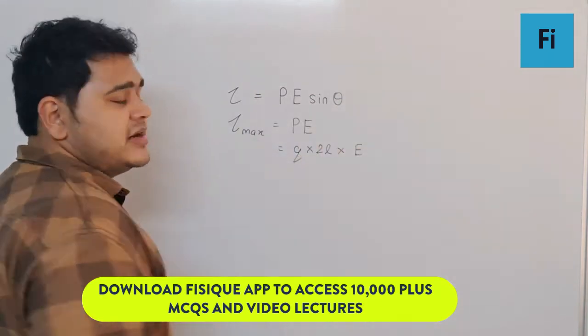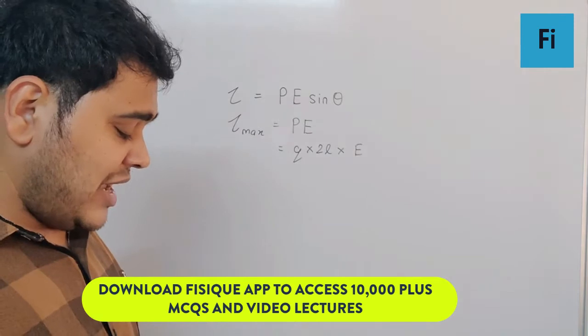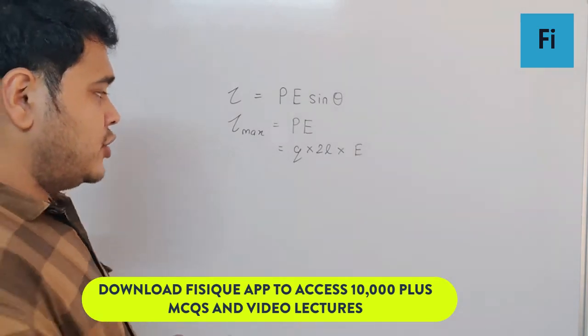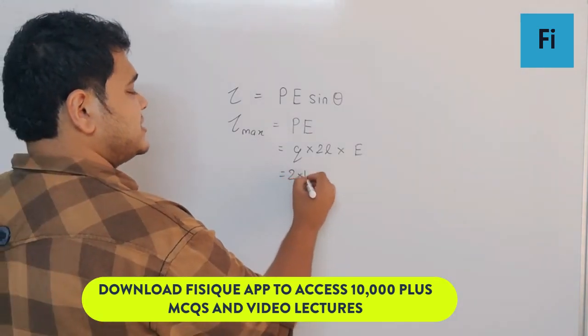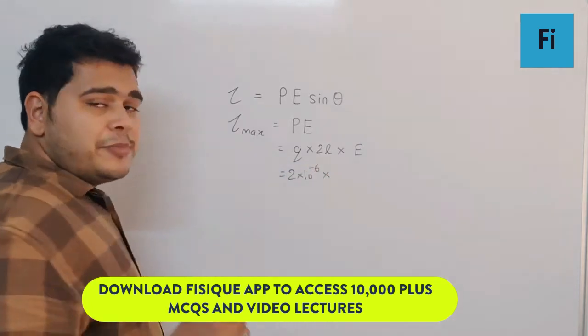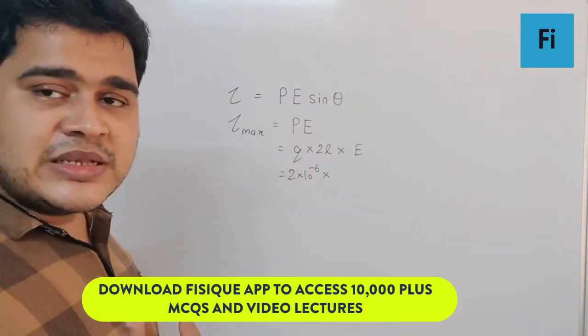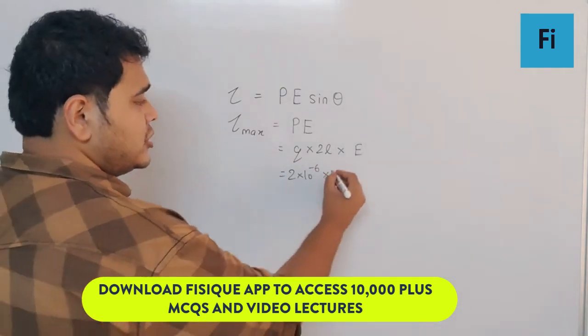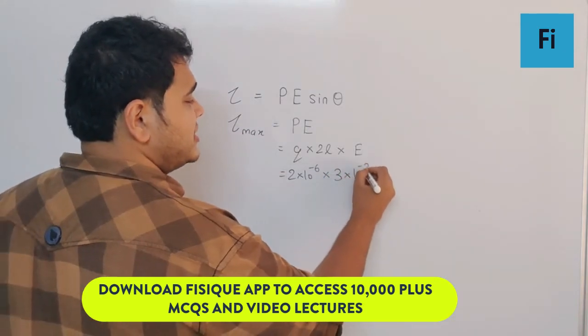Now the charge given here is 2×10^-6, separation between them—the length—is given as 3 centimeter, so it will be 3×10^-2.